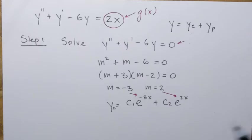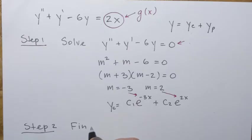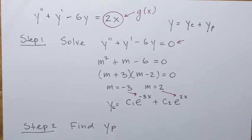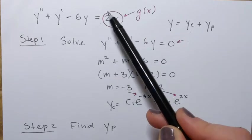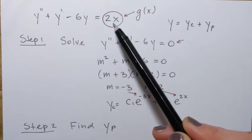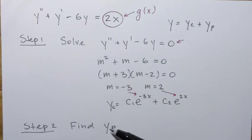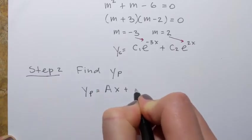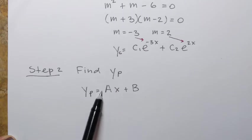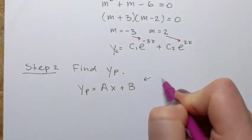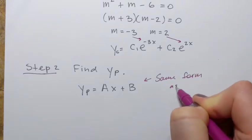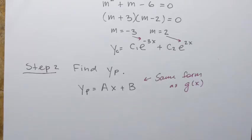Step two is to find yp, the particular solution. The form of the particular solution is the same as that of the function g of x. Here g of x is a polynomial — specifically just a linear function, 2x. That means our particular solution will have that same form: yp equals ax plus b, which is a polynomial of degree one, the same form as g of x.